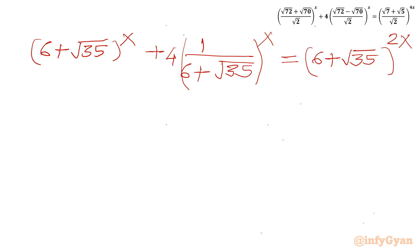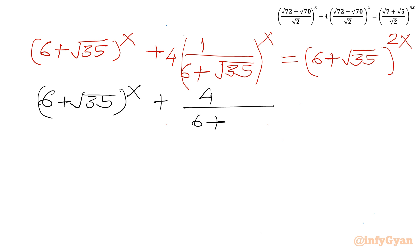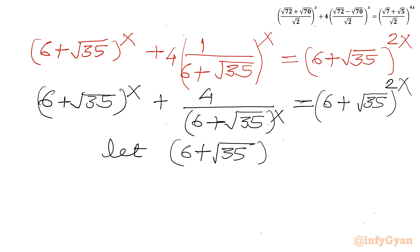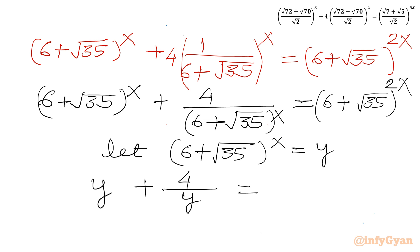Now I use substitution. I write (6 + √35)^x plus 4 over (6 + √35)^x, equal to (6 + √35)^(2x). Let y = (6 + √35)^x, so the equation becomes y + 4/y = y².